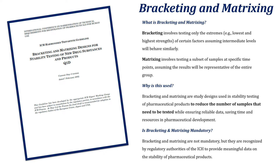Ever wondered how drug companies test if their medicines stay good over time? They use two key techniques called bracketing and matrixing. Bracketing involves testing only the extremes — e.g., the lowest and the highest strengths — assuming the intermediate levels will behave similarly. Matrixing involves testing a subset of samples at specific time points, assuming the results will be representative of the entire group.